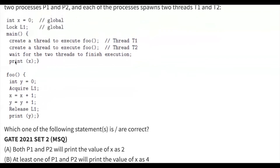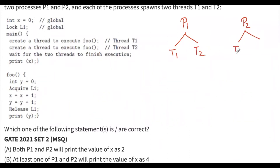Let's see the code now. There are two processes: Process 1 and Process 2. Process 1 has two threads called T1 and T2; similarly Process 2 has two threads called T1 and T2. There is a global variable called x initialized to 0.